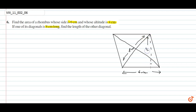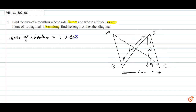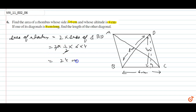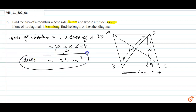Area of rhombus ABCD equals twice the area of triangle BCD, which equals 2 into half into base into altitude, giving us 24 cm square. So we know the area of the rhombus is 24 cm square.